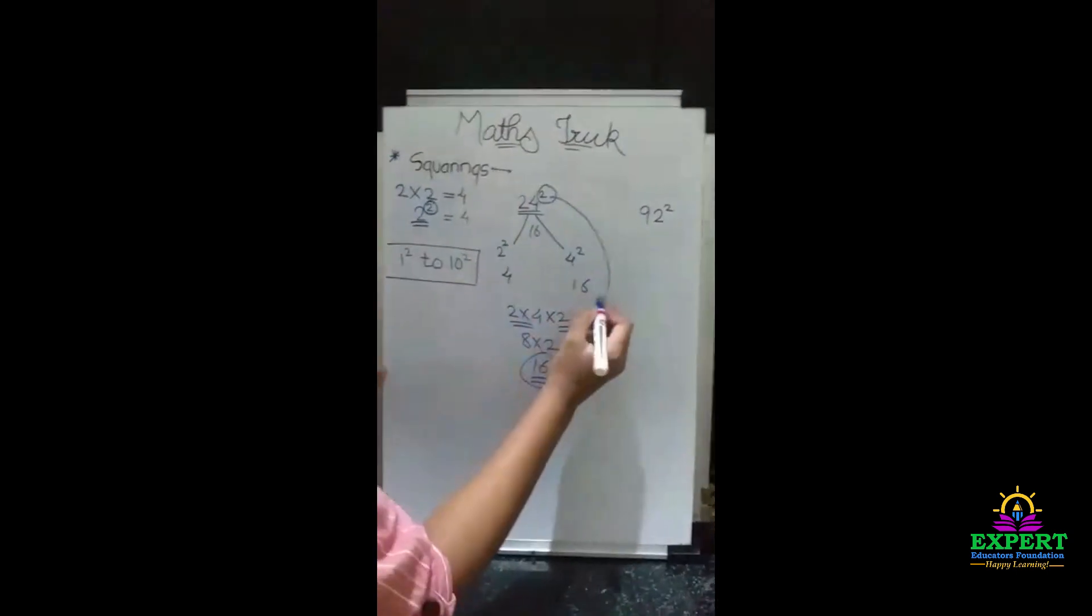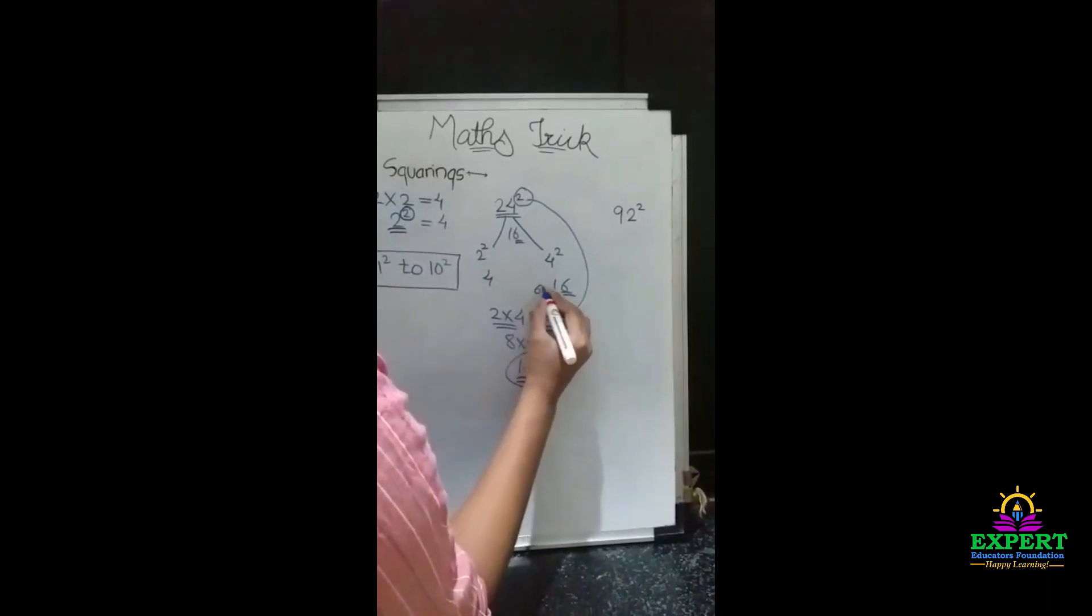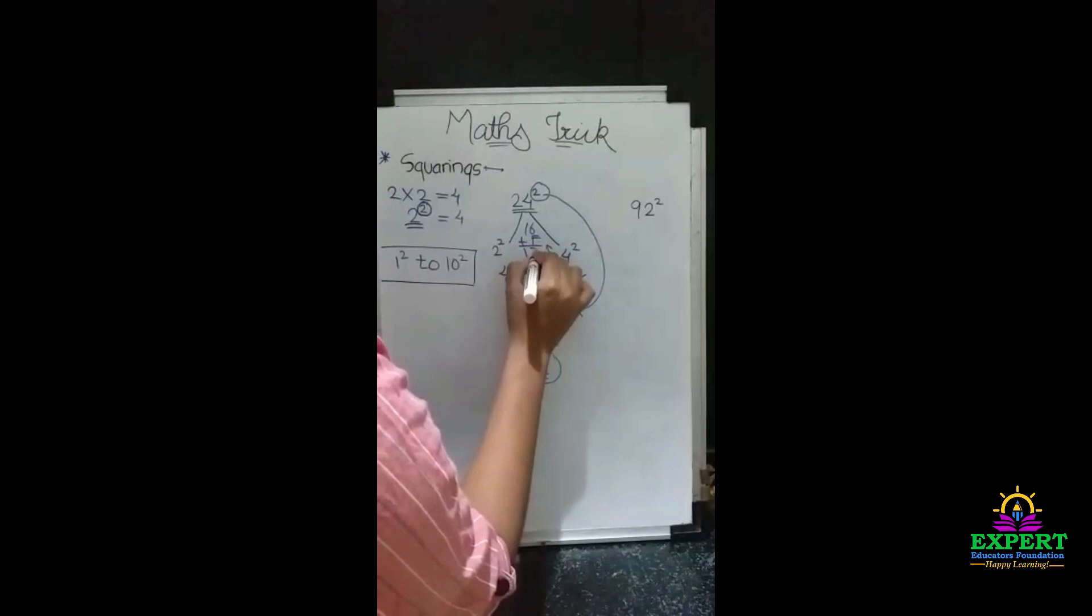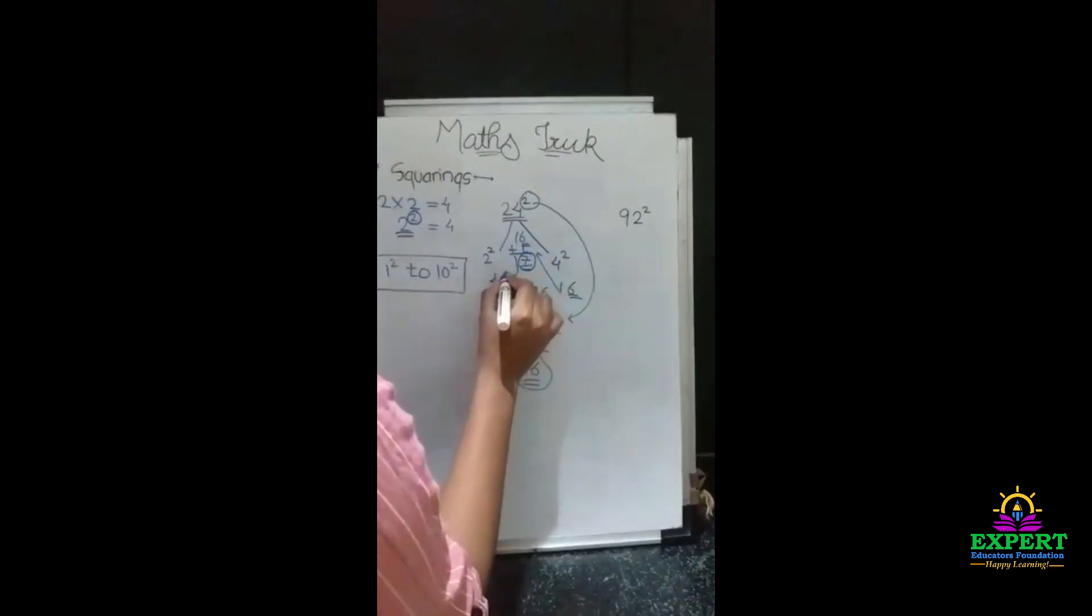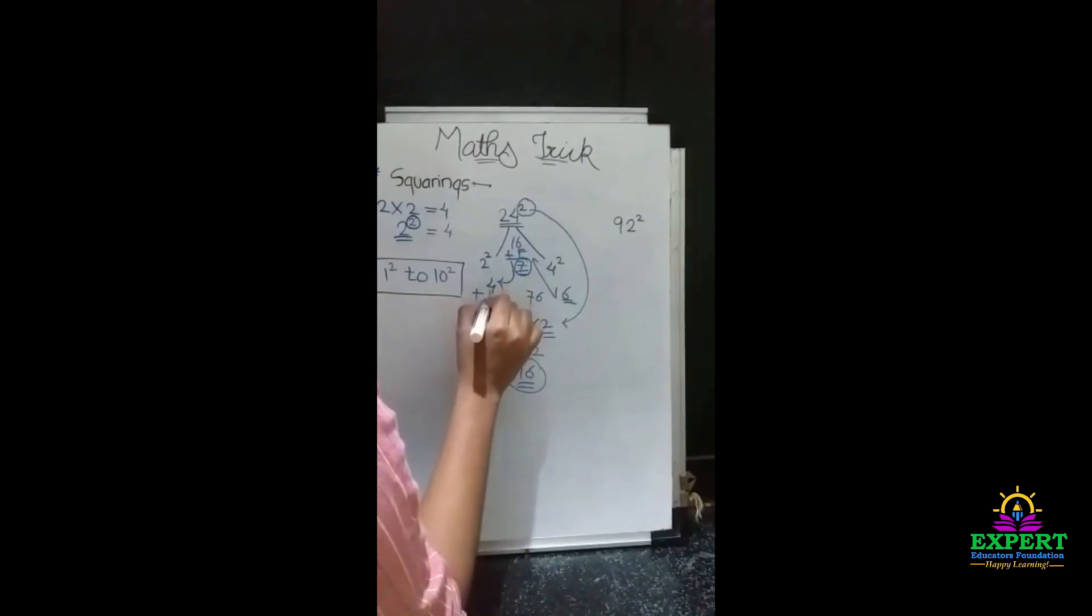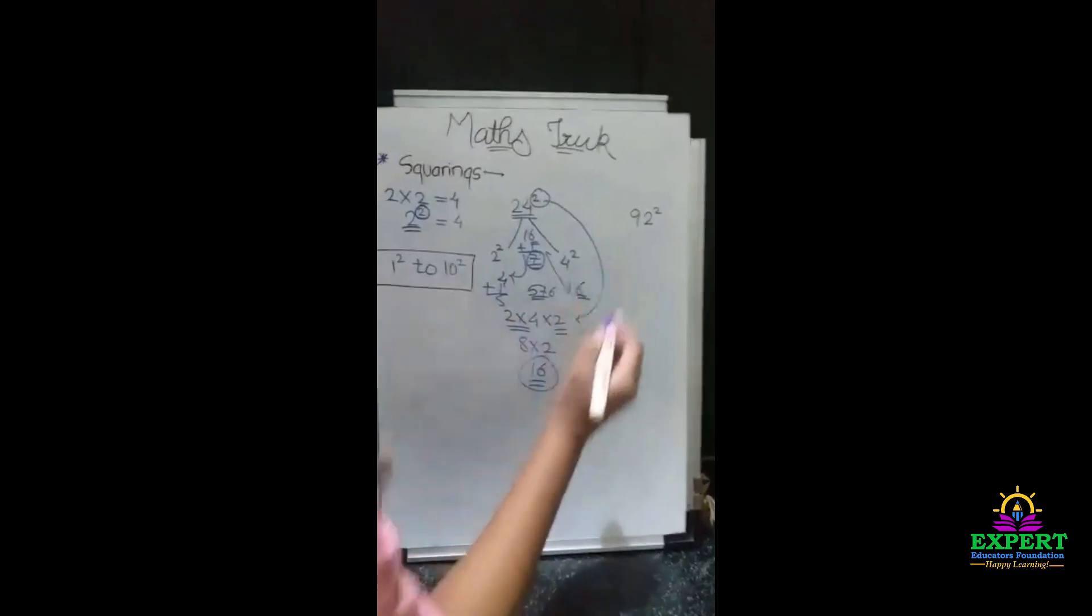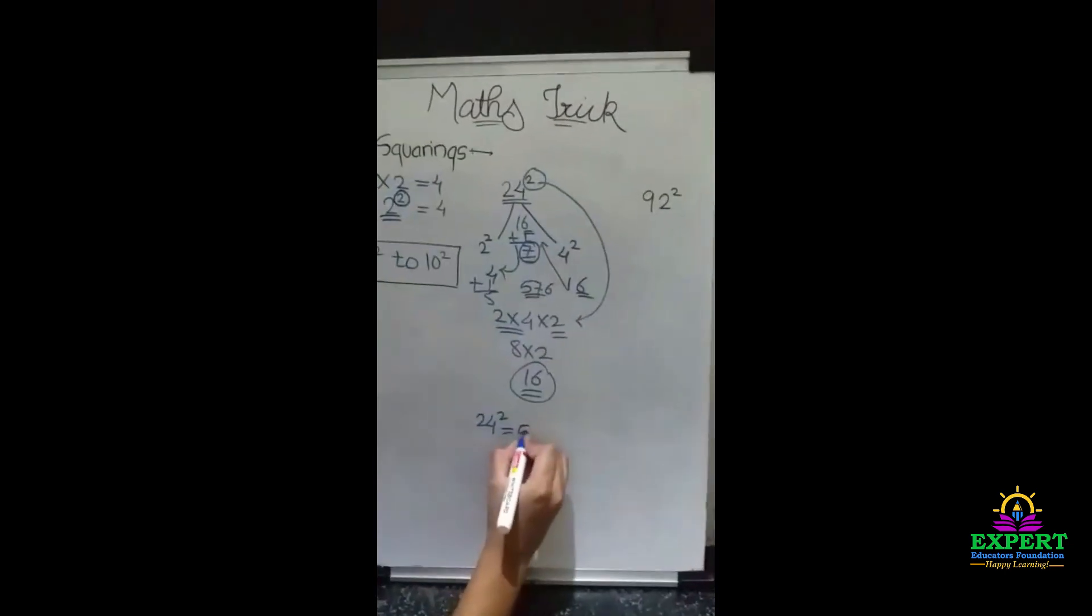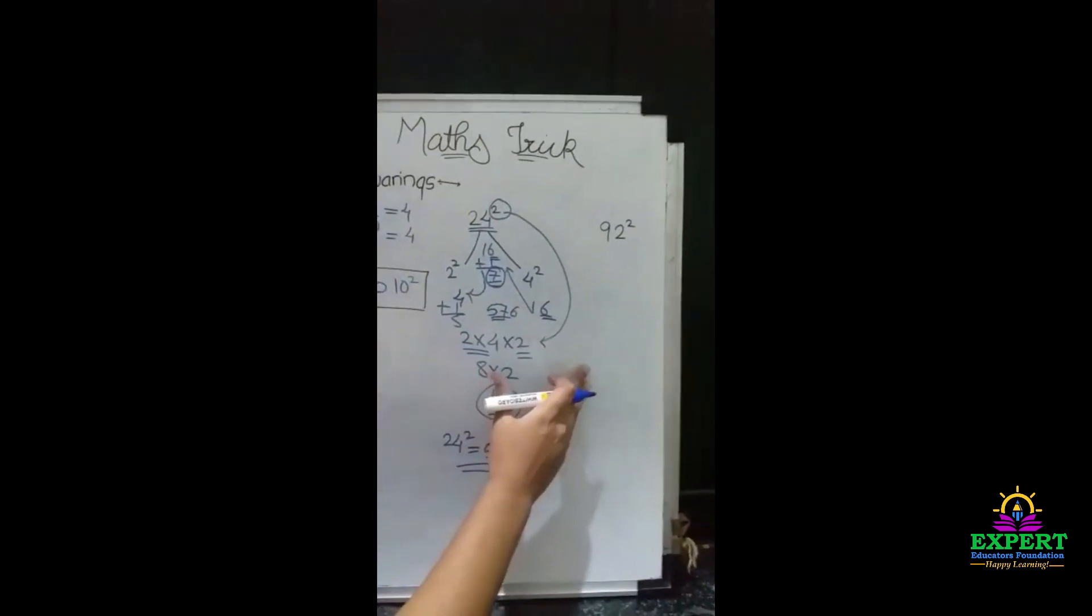Now this 16 we will keep in the middle. Here we're finding two digits, so we will keep the 6 over here, and this 1 will carry over to the 16, that's 16 plus 1, it's 17. We will keep the 7 over here, and this 1 carries over to the 4, plus 1 is 5. So our final answer of 24 squared is 576. That's easy, right? This is the trick to solve this question.